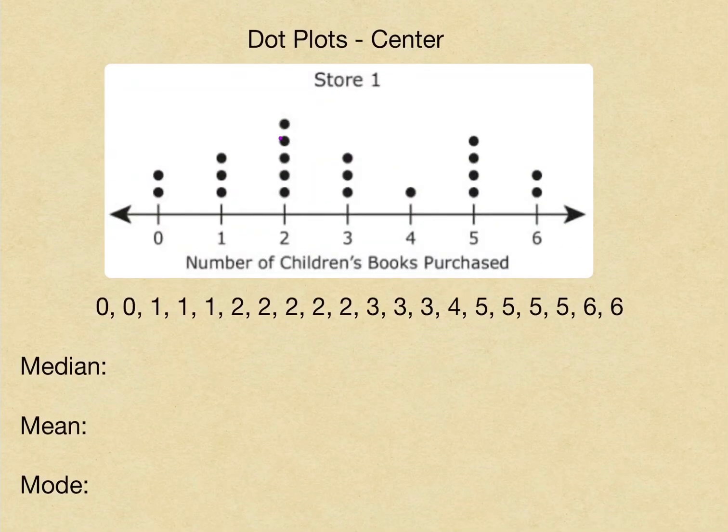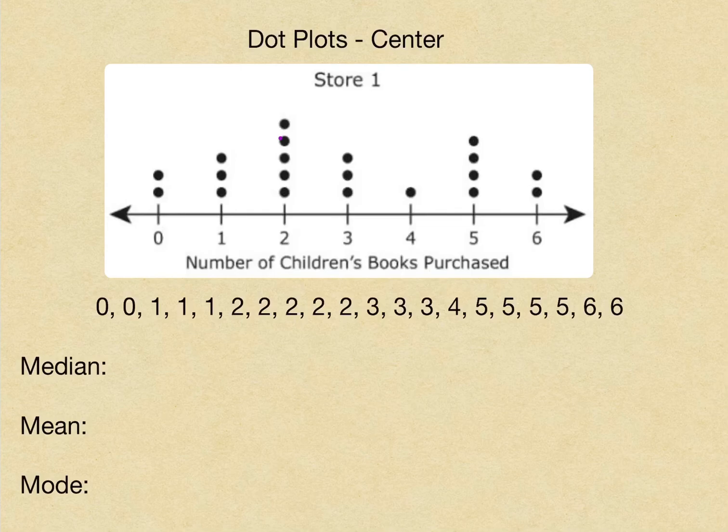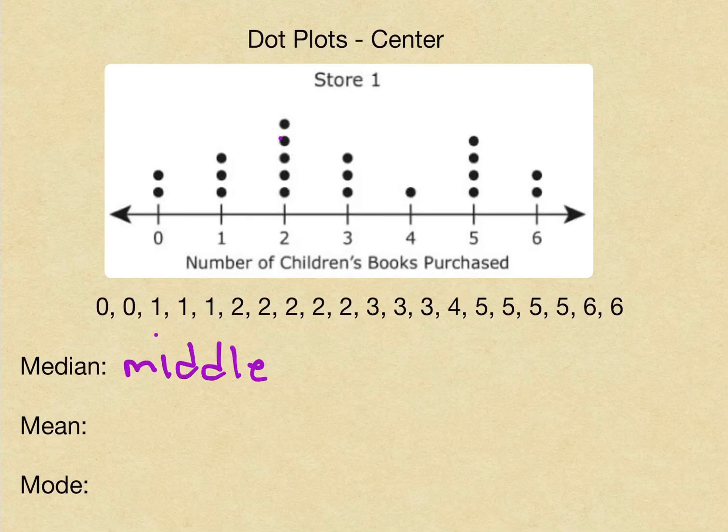So for our measures of center, we have the same dot plot that we were just looking at, and we're going to be looking at median, mean, and mode. Now I went ahead and typed out the points that we already wrote on the first one, so we can use them if we need to. First, let's start with our median. Now remember, the median is our middle number. And we have to put our numbers in order from least to greatest. We already did that here.